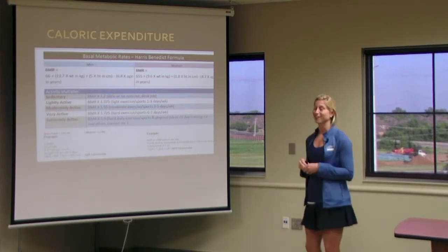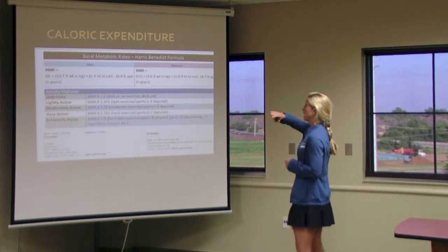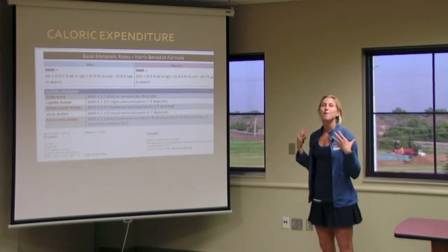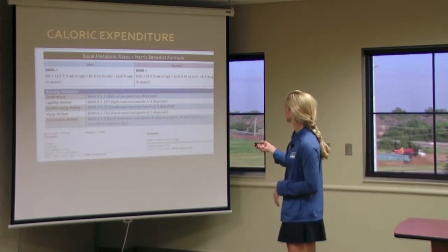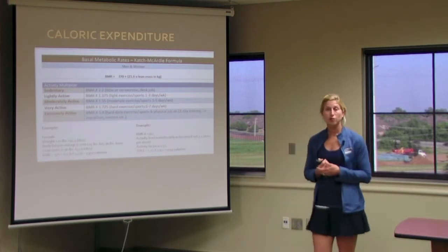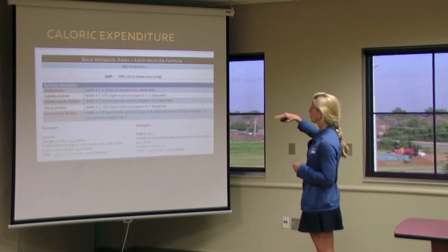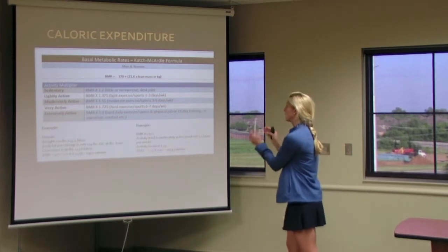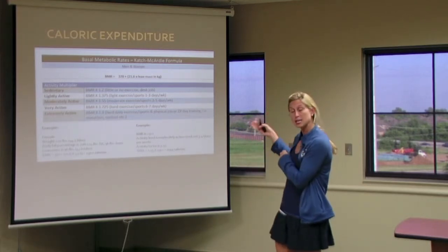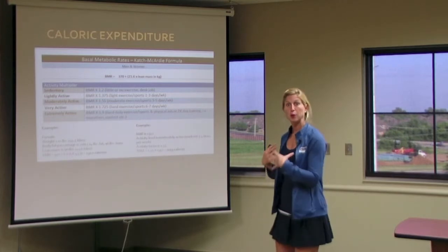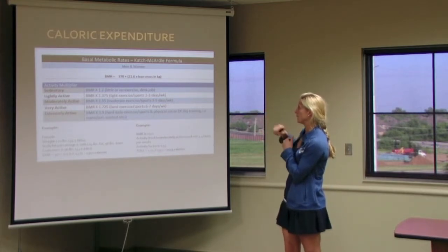The activity multiplier is also used in the Harris-Benedict formula, because depending on how much movement someone does during the day, they may need more or fewer calories. In the Ketch-McCardell formula, we are also looking at basal metabolic rate and including the activity multiplier, but we are no longer looking at age — just lean body mass: how much muscle, bone, organs, and tissue the person has on their body, then applying the activity factor.